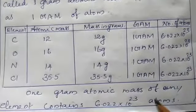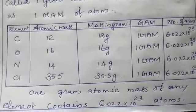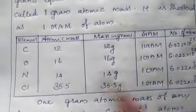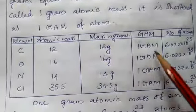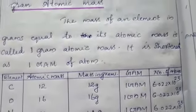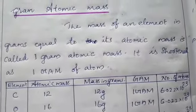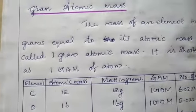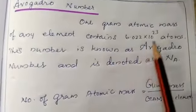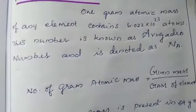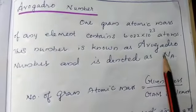So 1 GAM atomic mass of any element contains 6.022 × 10²³ atoms. In all elements, the number of atoms is 6.022 × 10²³. This number is named the Avogadro number. One GAM atomic mass of any element contains 6.022 × 10²³ atoms. This number is known as Avogadro number and is denoted as Nₐ.